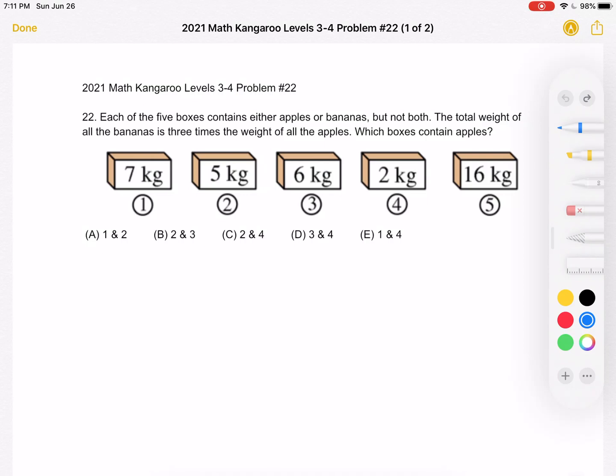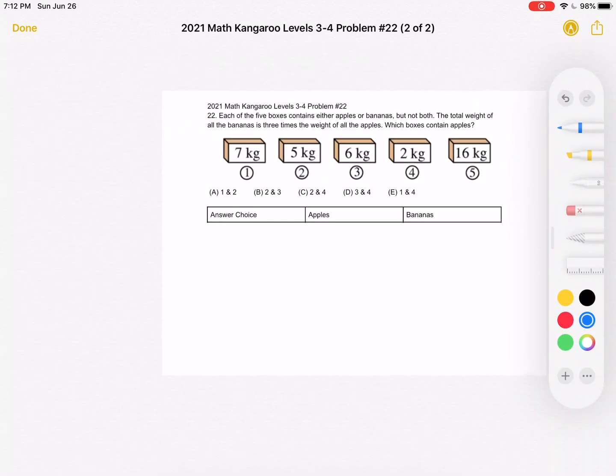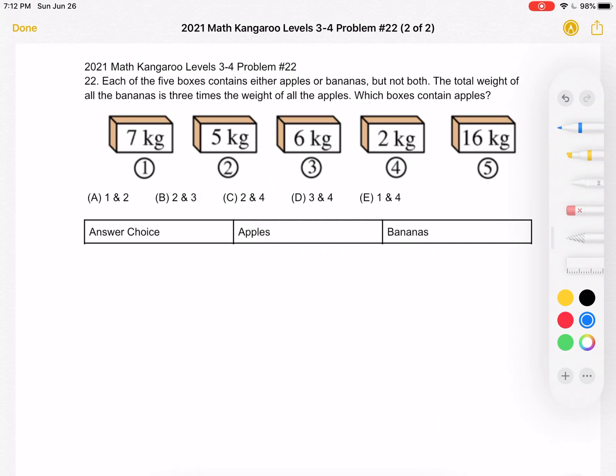This is the problem as it originally appeared on the test, and here is where we'll be doing the solution. We're going to go through each answer choice and verify this condition, which is that the total weight of all the bananas is three times the weight of all the apples.